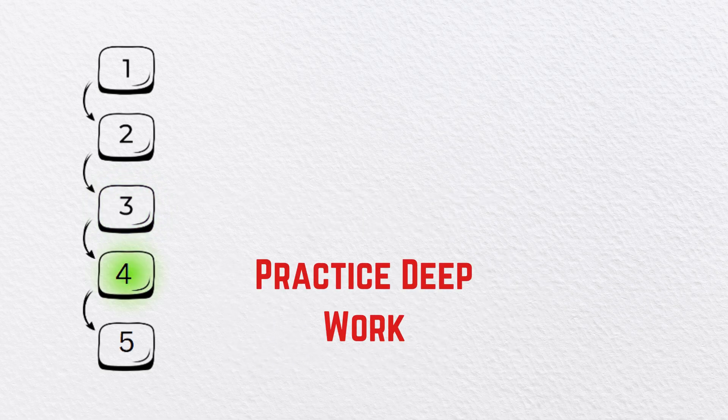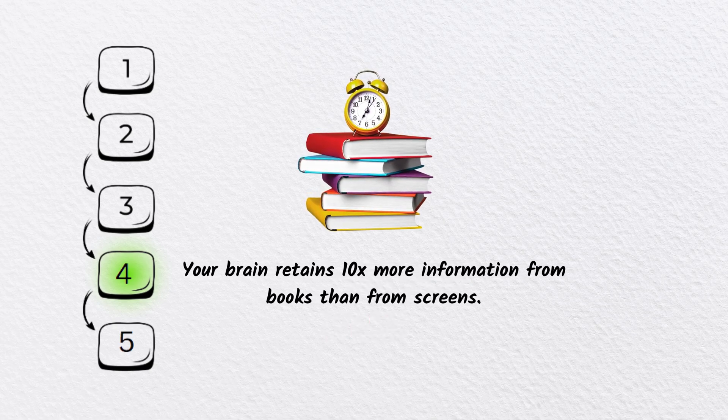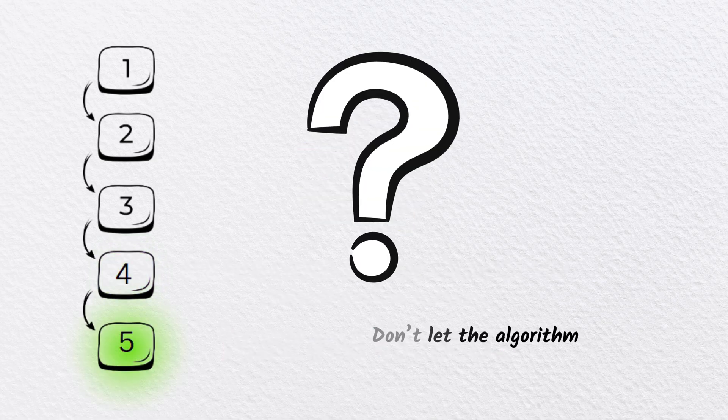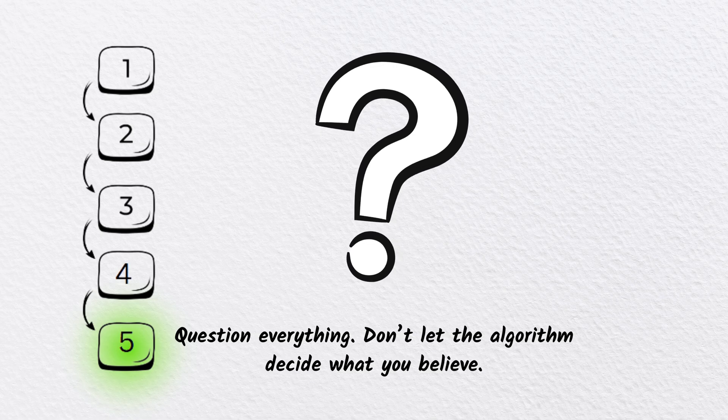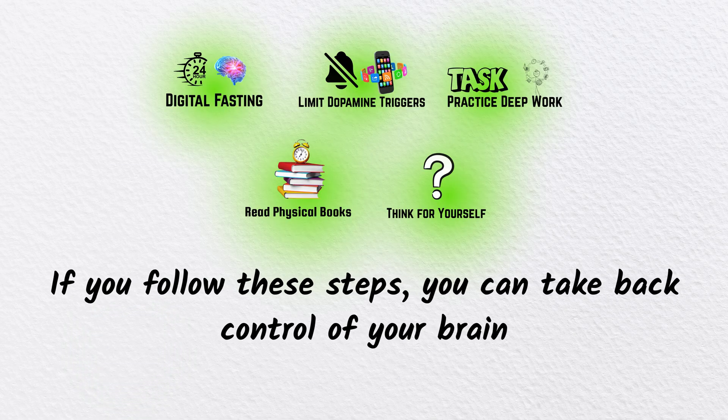Four: Read physical books. Your brain retains 10 times more information from books than from screens. Five: Think for yourself. Question everything. Don't let the algorithm decide what you believe. If you follow these steps, you can take back control of your brain before it's too late.